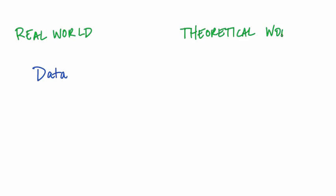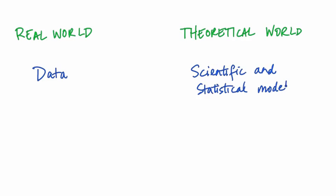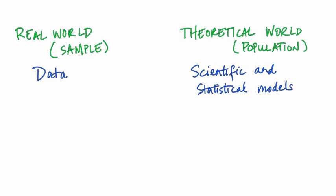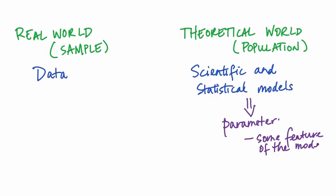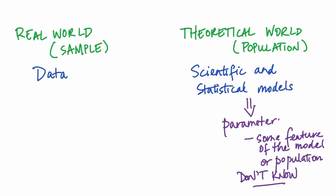Let's revisit the way we're looking at the inferential process. We have data in the real world and models in the theoretical world, or the theoretical world could be a population and our data could be measured on a sample from the population. Either way, we have parameters in the theoretical world which are features of the models or the population, and typically we don't know the values of the parameters. We use the science of statistics to estimate them by a statistic calculated from our real world data.